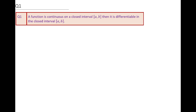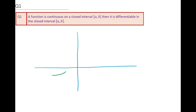Question number one: a function is continuous on a closed interval [a, b] — then it is differentiable on the closed interval [a, b]. Let me sketch a function here to elaborate. Let's say the function looks like this, under the closed interval from a to b. This point is a with value f(a), and this point is b with value f(b).